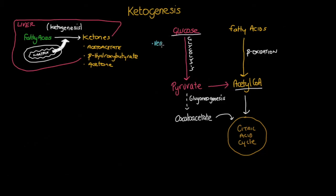When glucose is unavailable to cells — for example, during very low-carbohydrate diets, fasting, or uncontrolled type 1 diabetes — pyruvate cannot be formed by glycolysis. This in turn leads to a decreased availability of oxaloacetate for the citric acid cycle.